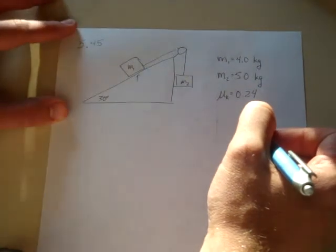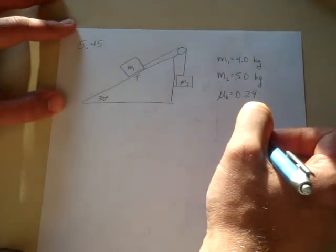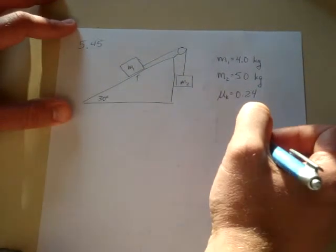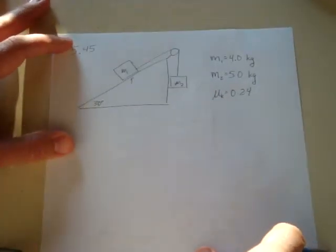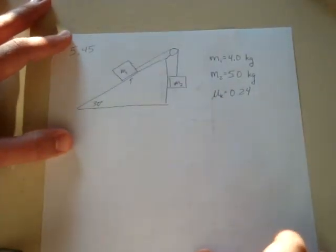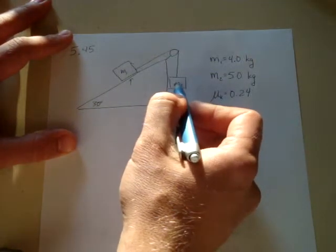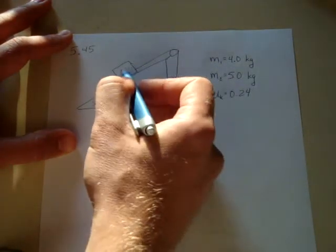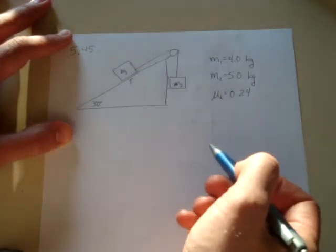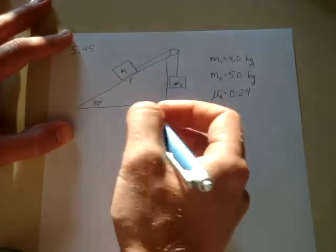It says that the coefficient of kinetic friction between the incline plane and the block is equal to 0.24. It asks to find the magnitude of the acceleration of the masses and the tension in the chord. What we need to do is start off by drawing a force diagram. We're going to need to know information about the forces and the acceleration of each of these things, and that would be our phone ringing. I'm just going to keep going on.